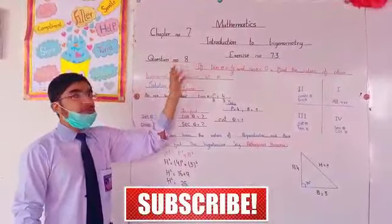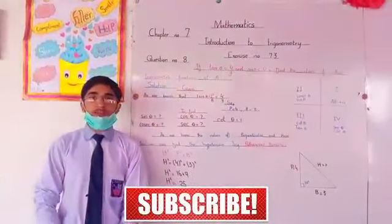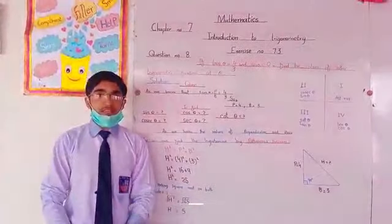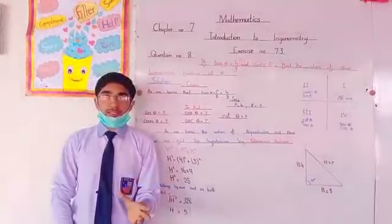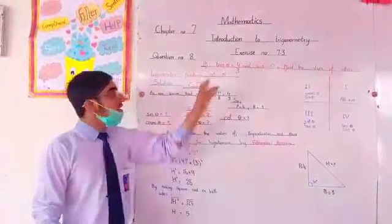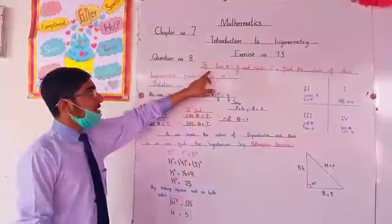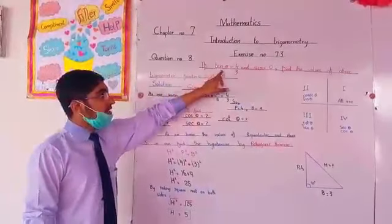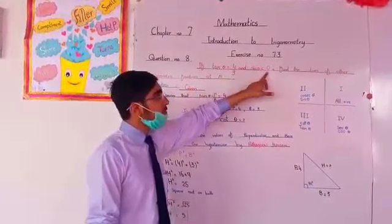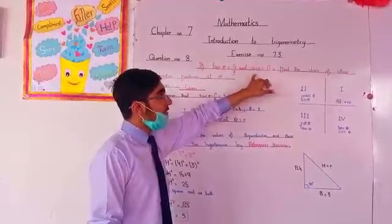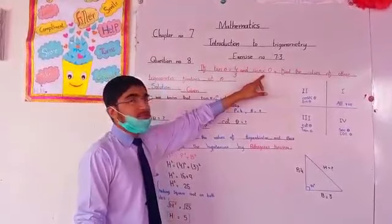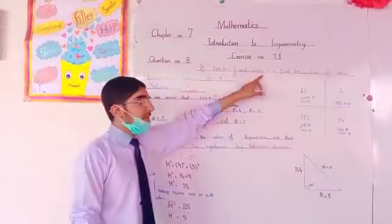Question No. 8. Before solving the question, I will tell you that if we understand the statement, then we can solve the question easily. Now we come to the statement. If tan theta is equal to 4 over 3 and sin theta is less than 0, it means that number is negative.